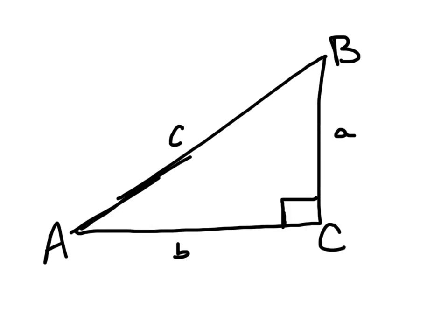So, we have our first term, hypotenuse. The hypotenuse is the line opposite of the 90 degree angle.